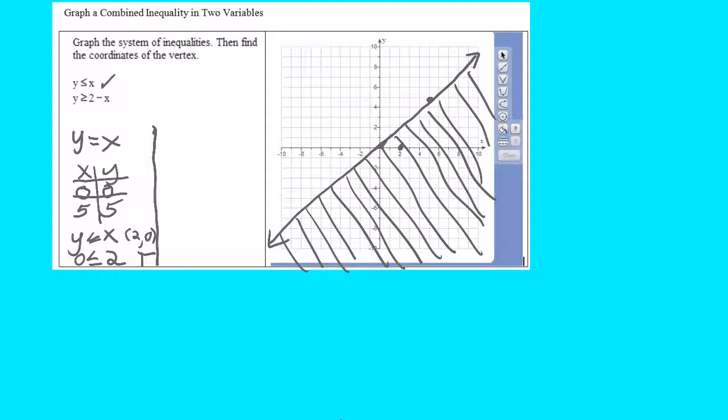So I've taken care of y is less than or equal to x. And now I'm going to look at y is greater than or equal to 2 minus x. And I'll write it with an equal sign over here.